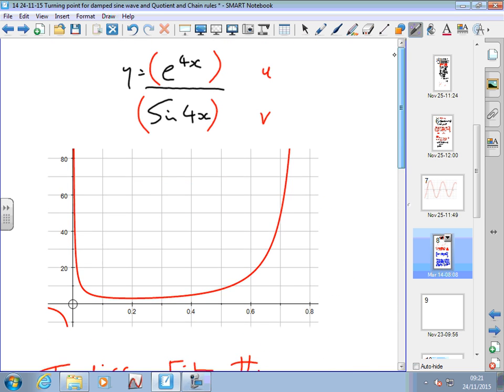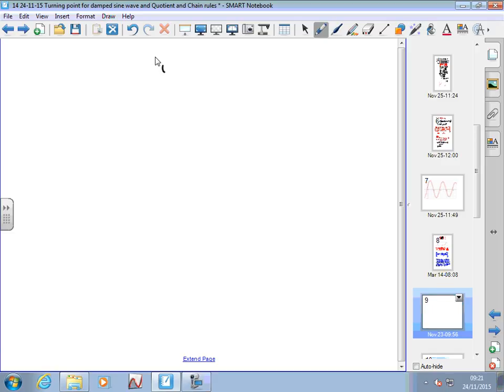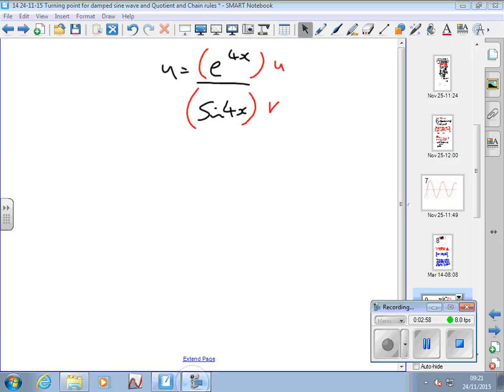y equals e to the 4x over sine 4x. We let u equal the top function and v equal the bottom function. It's all about applying the rule, and then once you've applied it, use algebra to try and simplify it.